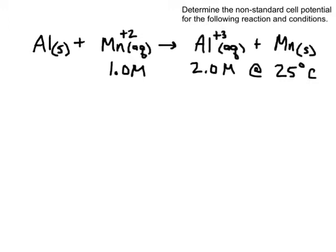I'm going to oxidize aluminum and reduce manganese 2+ to aluminum 3+ and elemental manganese respectively. And the non-standard conditions I'm going to employ here are that I'm going to have 2 molar, not 1 molar, but 2 molar aluminum 3+.